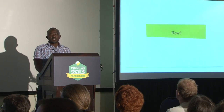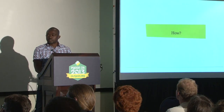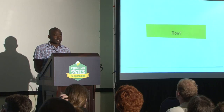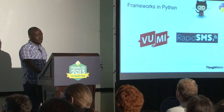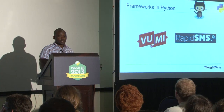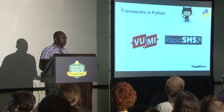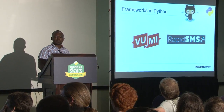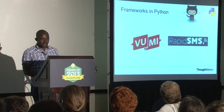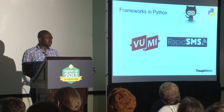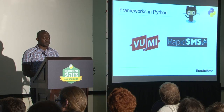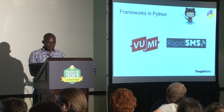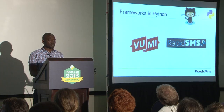So how do you add SMS and USSD capability to your application? In the Python world there are quite a few options. What we have used are Vumi and RapidSMS. Praekelt is the Vumi creator and one of the organizers of this event, so I'm sure most people know about Vumi. I'll give you a brief look at both.